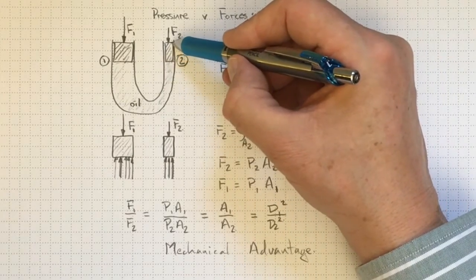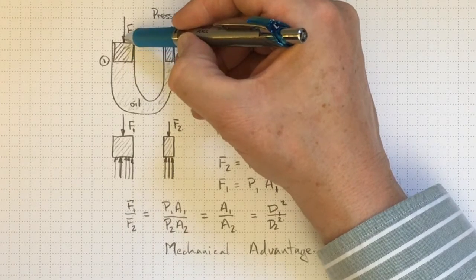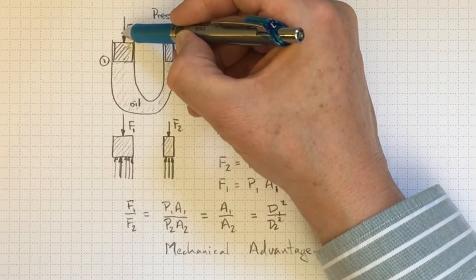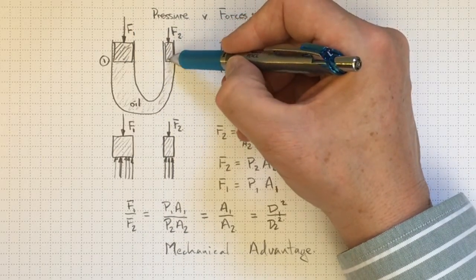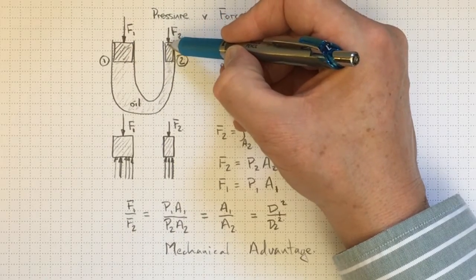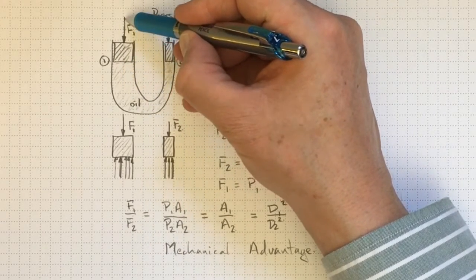because when I move this piston down, that piston will only move up one quarter as much. So the two must move down four times as much as one moves up. So I'm doing the same amount of work over here as I'm getting out over there.